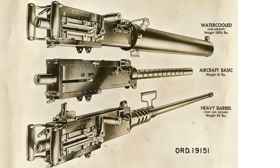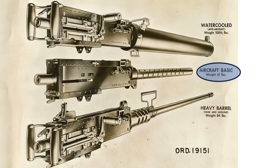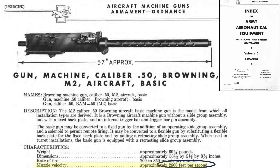This page shows the various types of Browning .50 caliber machine guns used in World War II. US bombers and fighters adopted the aircraft basic M2 model. This was the lightest model at 61 pounds. The gun's rate of fire is listed between 700 and 850 rounds per minute, or around 13 rounds per second, with a muzzle velocity equating to 2,800 feet per second, or Mach 2.5.